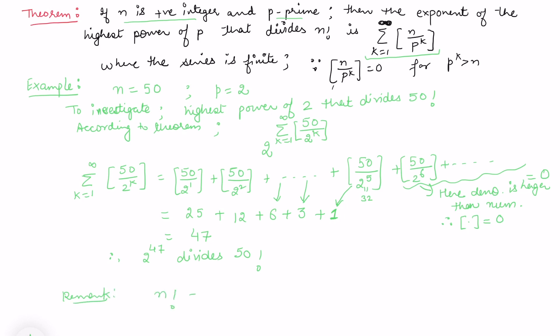This helps us in many cases: suppose you want to find n factorial and know what is 2 to the power a, or 3 to the power b, or 5 to the power c. You choose any prime and apply this formula to find the highest power that divides n factorial. Corresponding to each prime we can apply this test and determine the highest exponent.